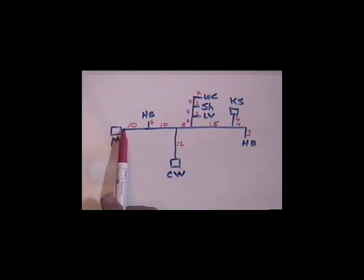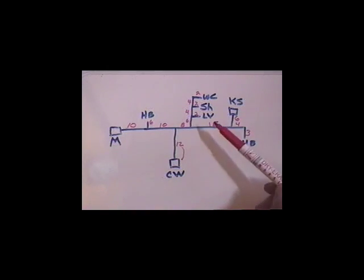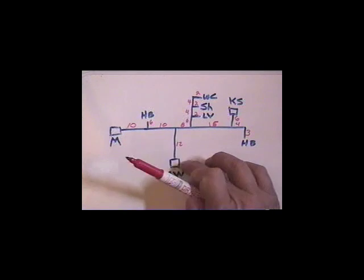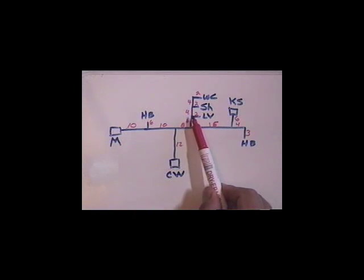Now from the meter to the first tee here is 10 feet, then we're running 6 feet out to the hose bib, another 10 feet between these tees, then 8 feet between here, 12 feet down to the clothes washer, and 6 feet up to the lav.